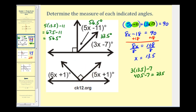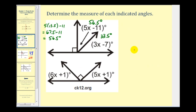Let's take a look at the second example. Notice these three angles form a straight angle. So if this is ninety degrees, the sum of the remaining two angles must also be ninety degrees — very similar to the problem above.